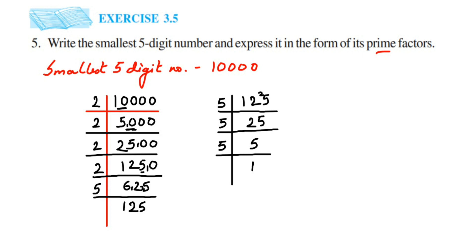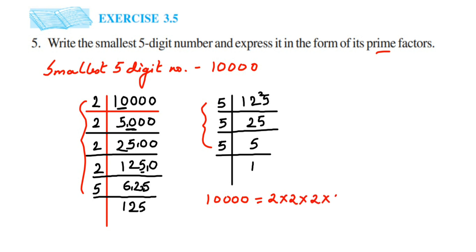Now for 125: it doesn't go into 2 or 3, so the next prime number is 5 again. 125 ÷ 5 = 25, and 25 goes into the five times table again, so 25 ÷ 5 = 5, and finally 5 ÷ 5 = 1. Now we have all the prime factors. 10,000 can be expressed as a product of these prime numbers.